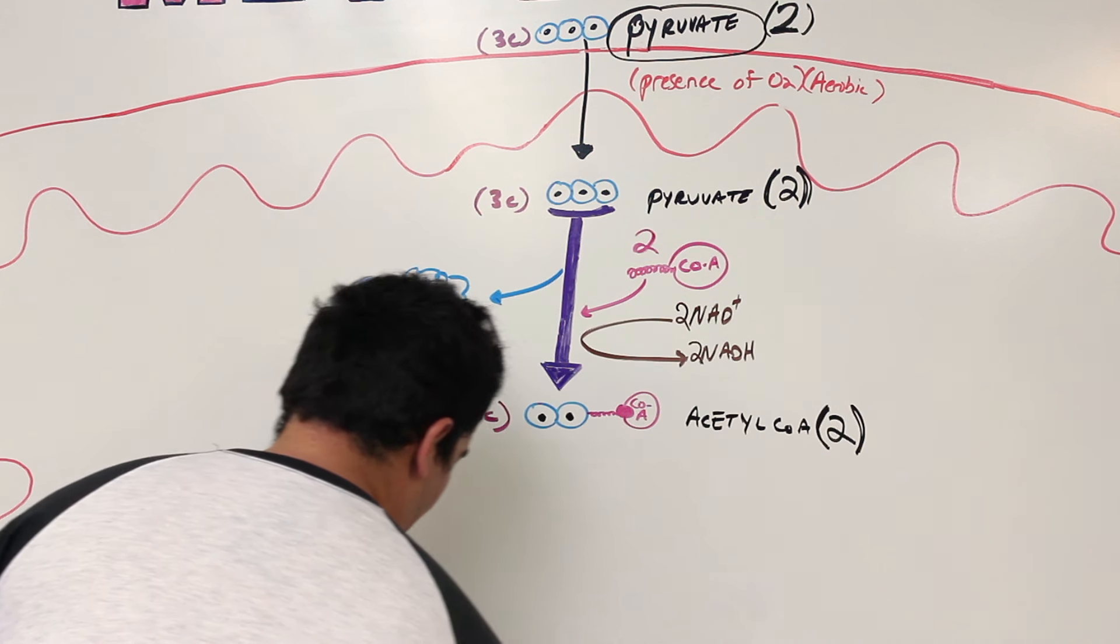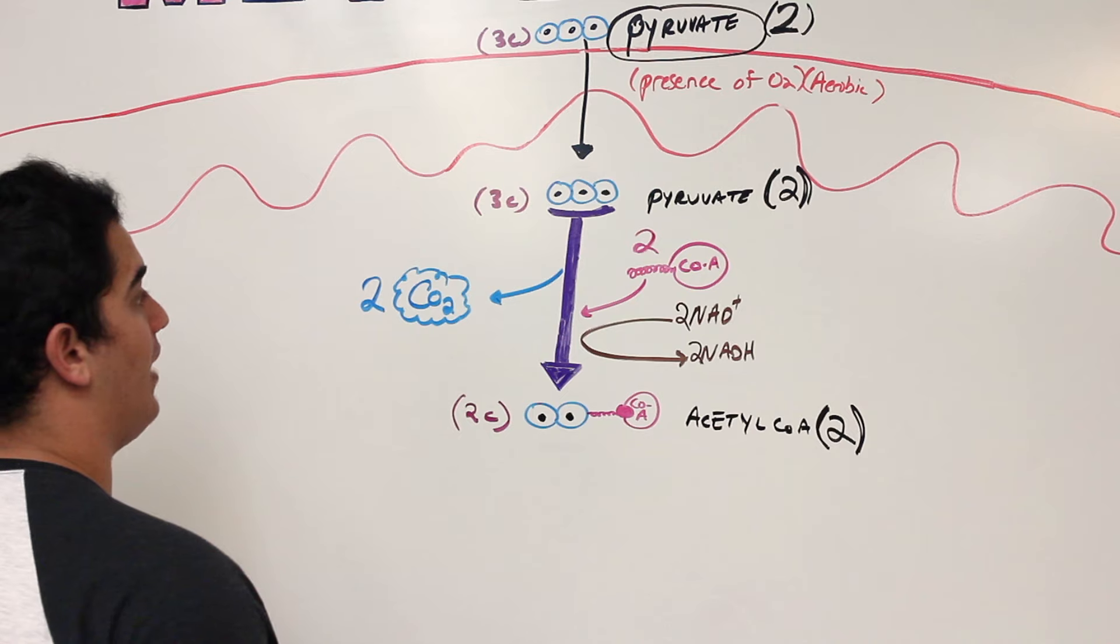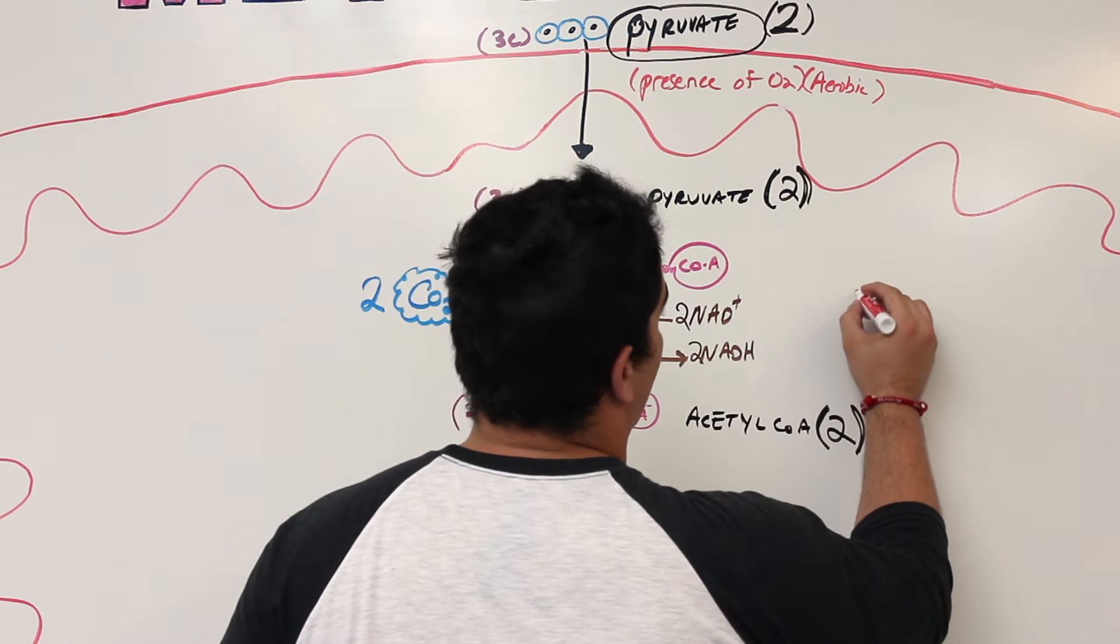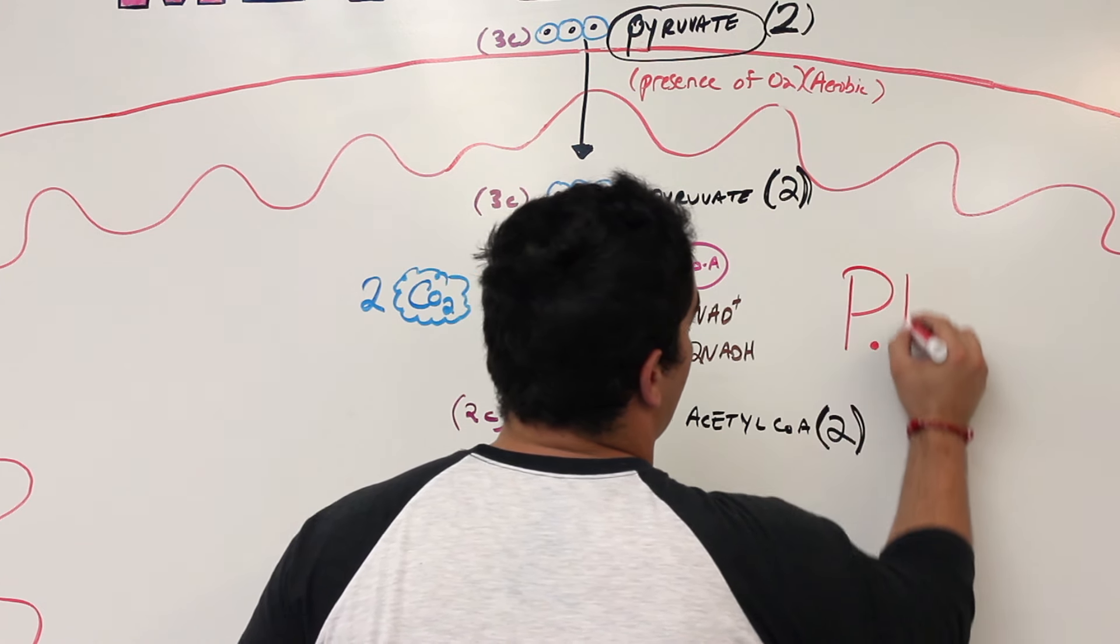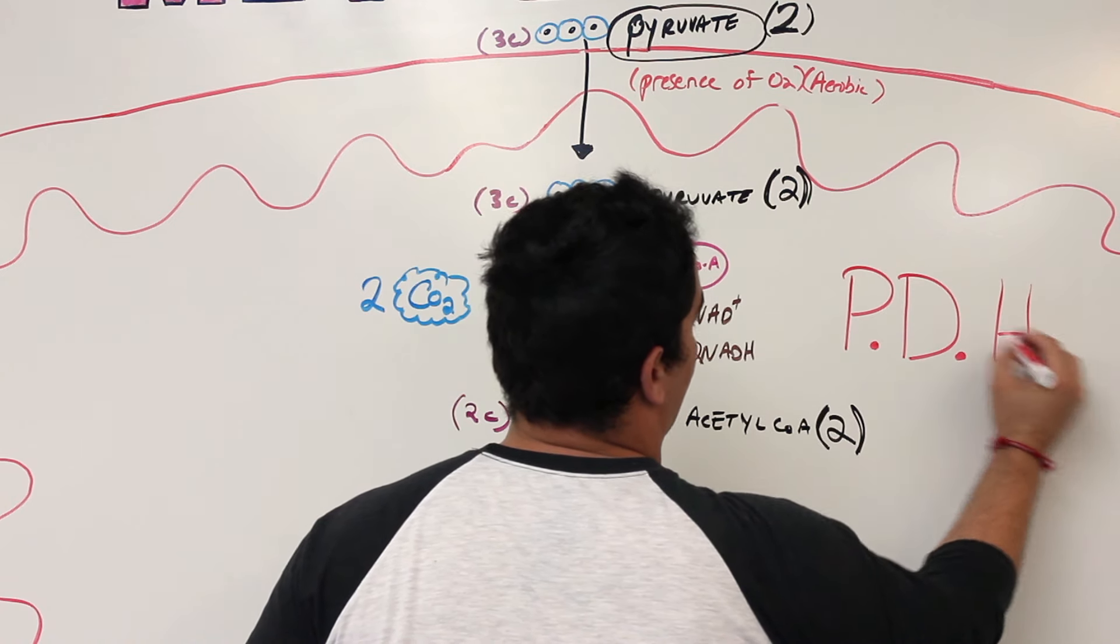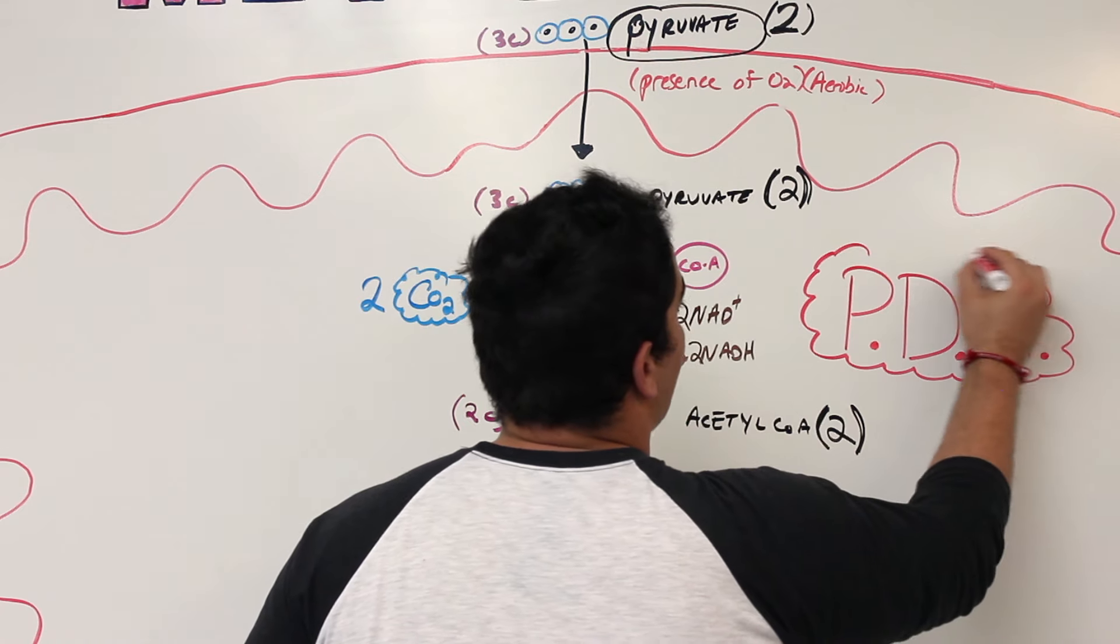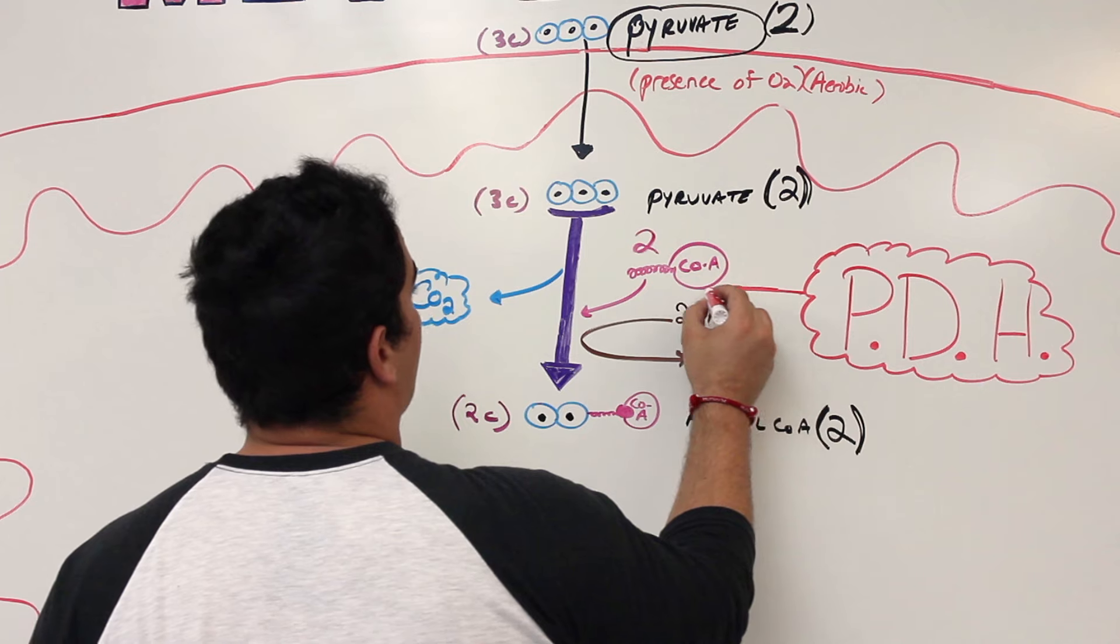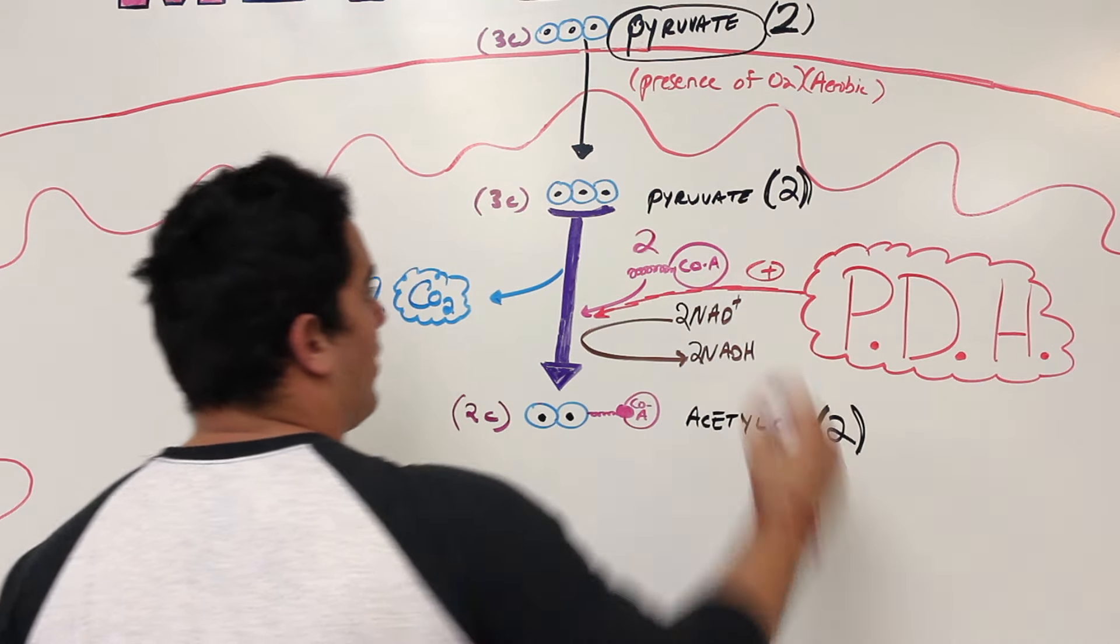This whole process is regulated by a specific enzyme. And this enzyme, we'll talk about this in great detail in biochemistry, this enzyme is called a pyruvate dehydrogenase enzyme. And this enzyme is super interesting. But he is the enzyme that is catalyzing this reaction here.